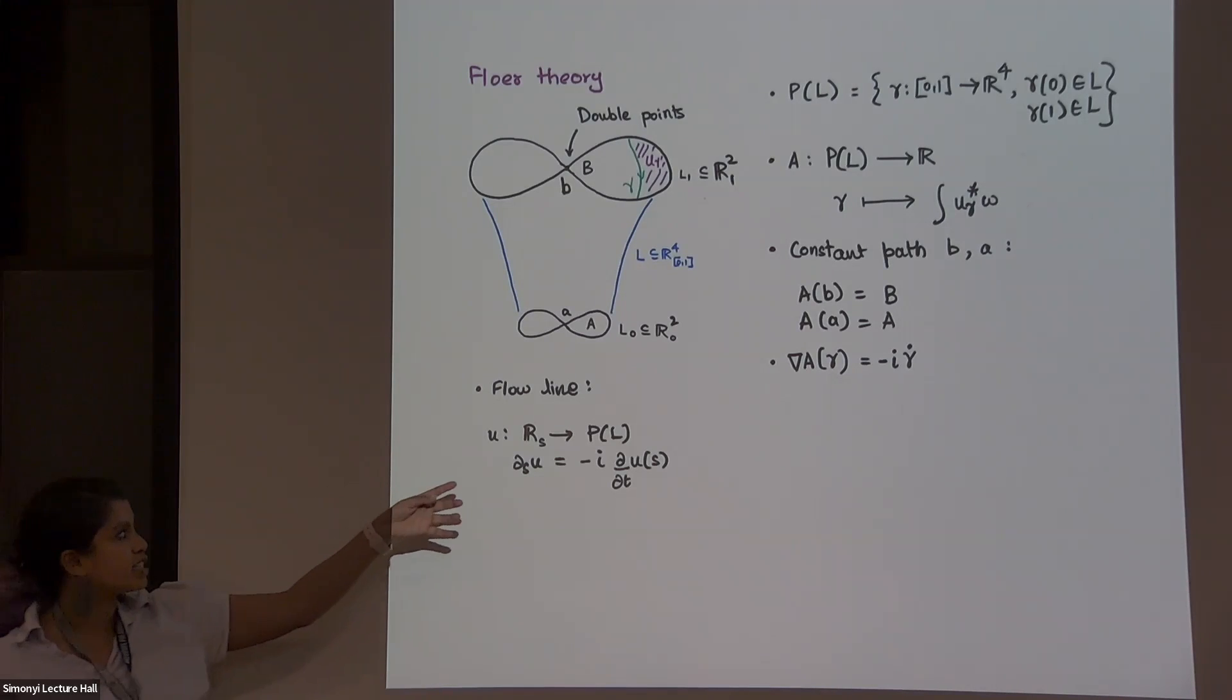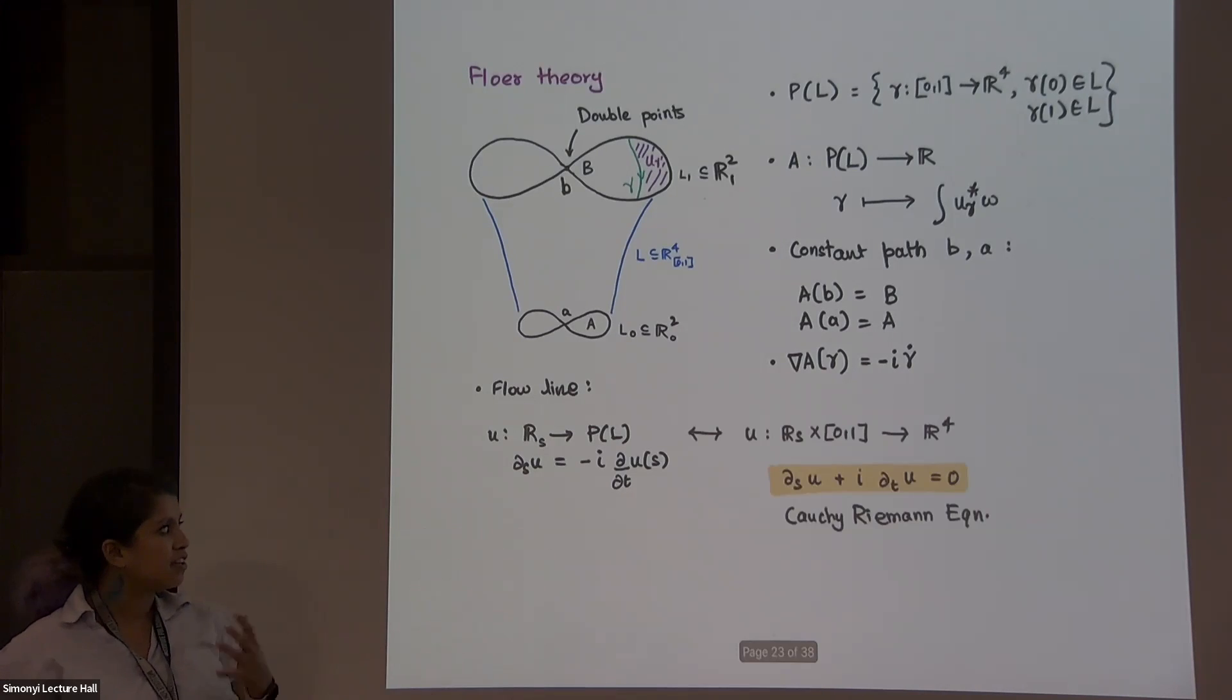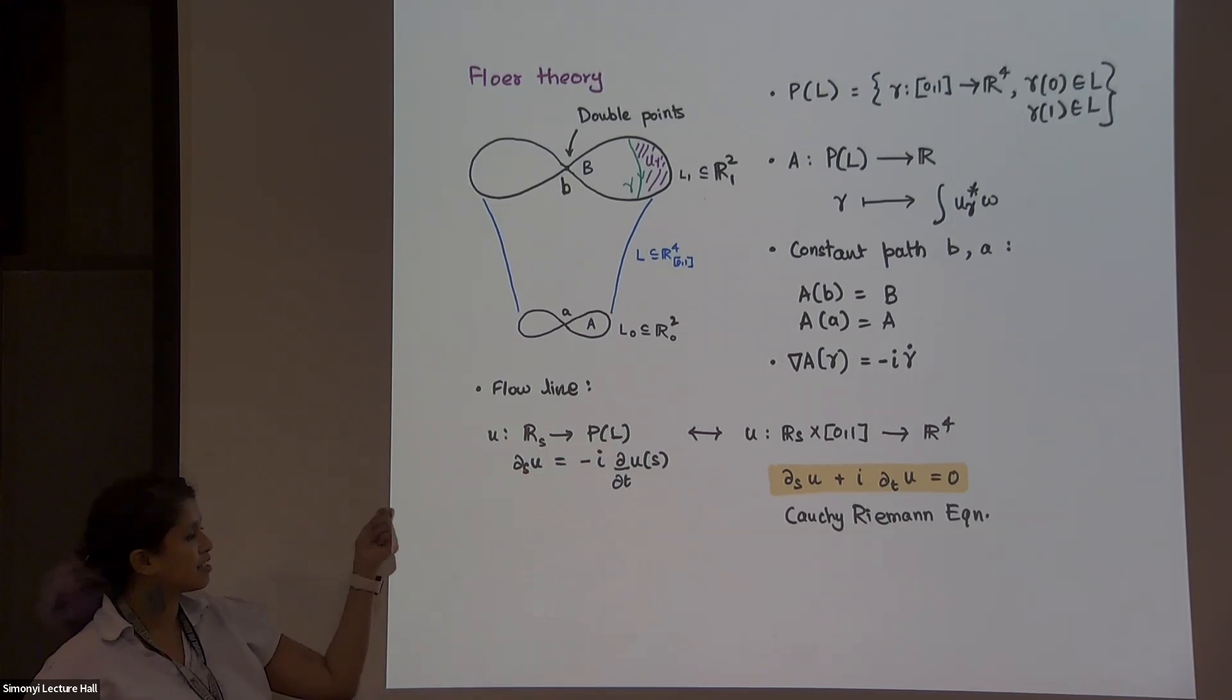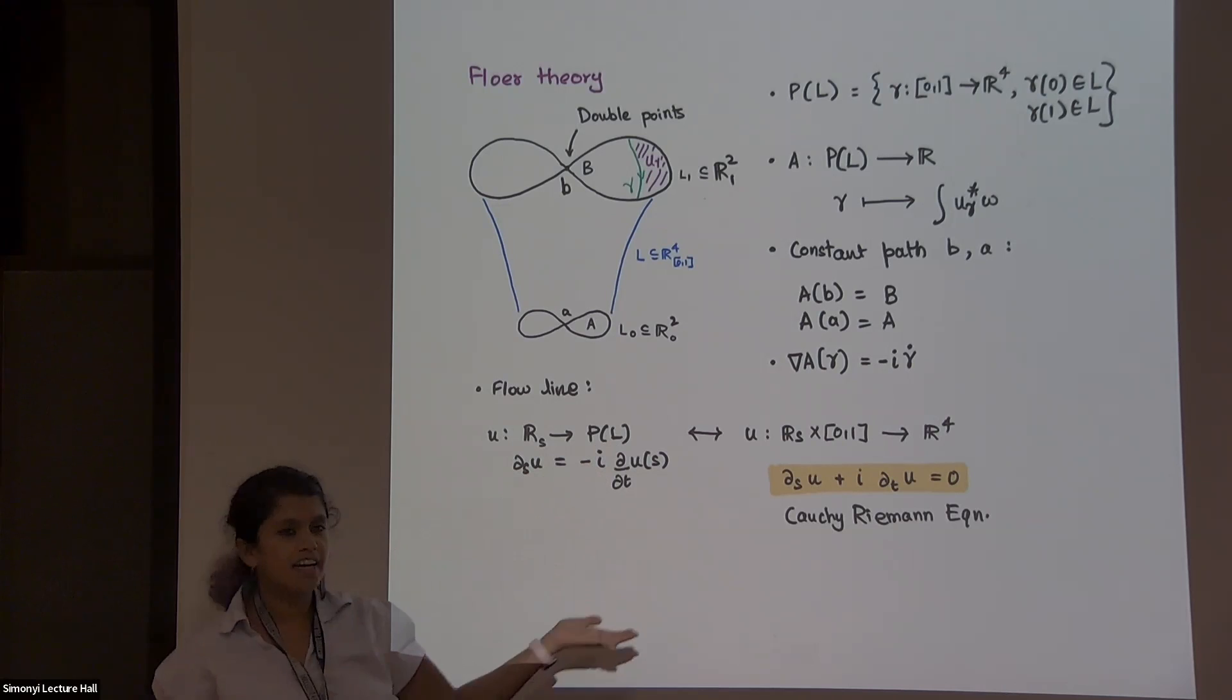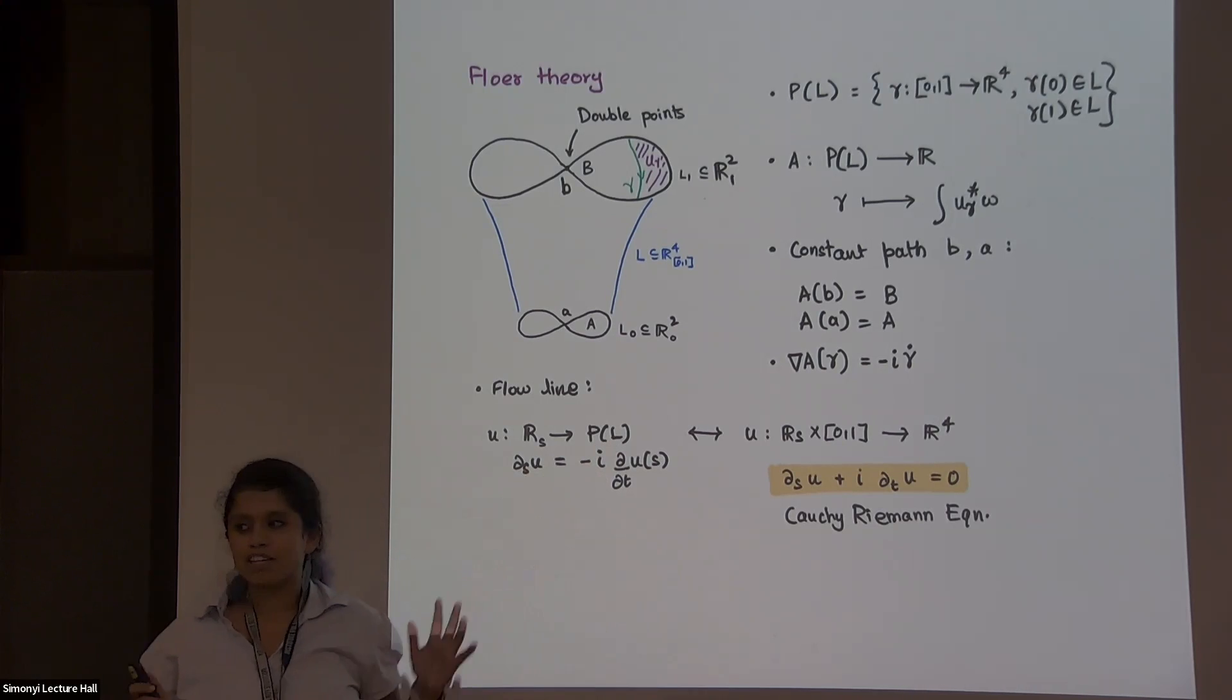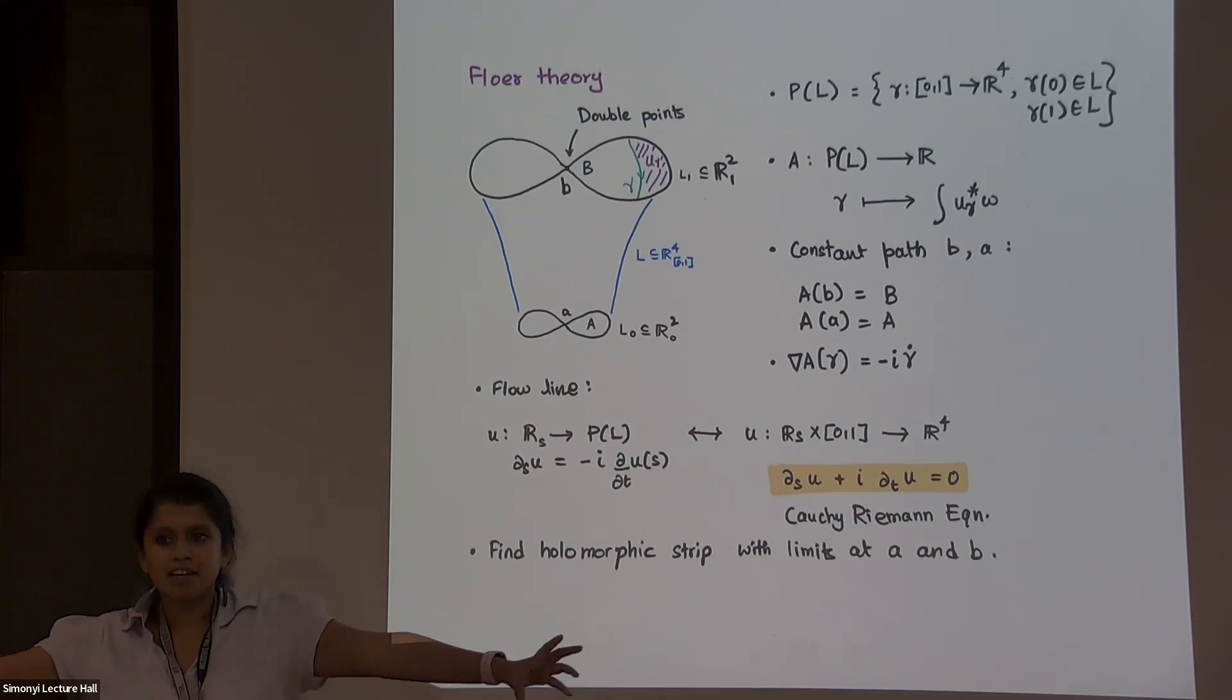So, what do we do now? What is the flowline? It's the path from R, the subscript s is the coordinate, into my path space. So that some equation is satisfied. If you rewrite it, and move the interval from the path space into this side, you just get the Cauchy-Riemann equation.